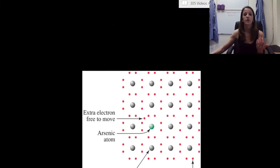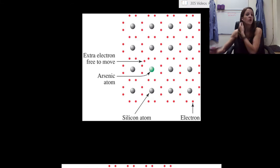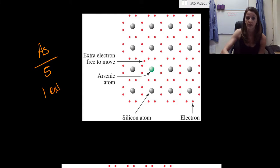So let me show you, starting off with arsenic first. So we said arsenic has five valence electrons. So it's one extra electron. So what we've done here is we have this green one right here, this green circle, that's an arsenic atom.